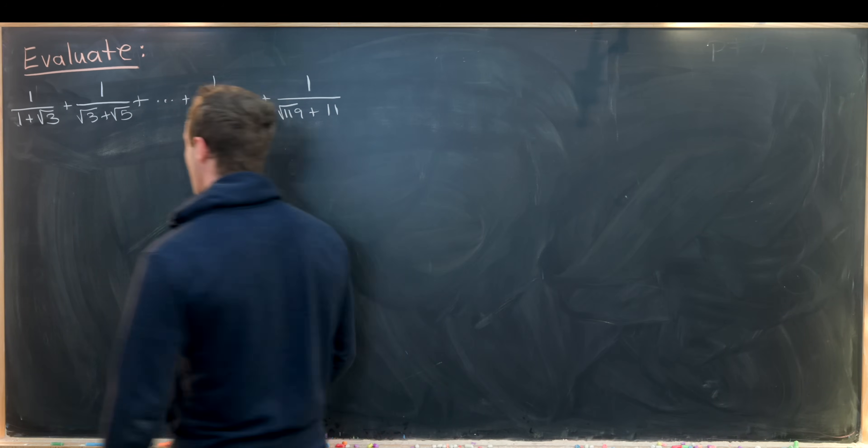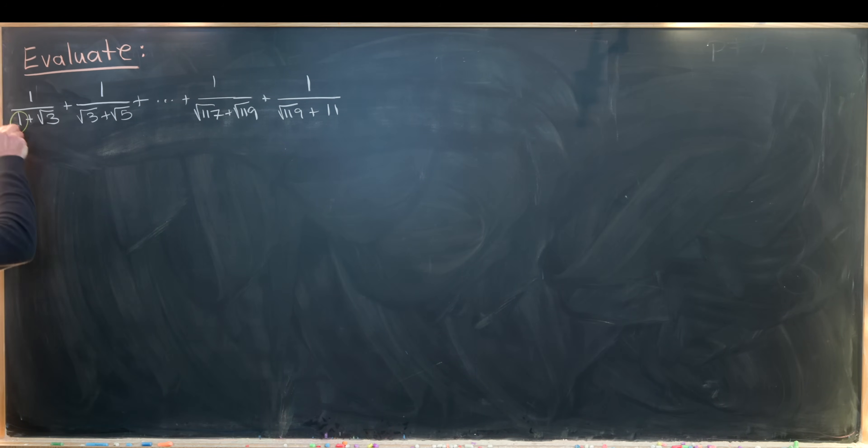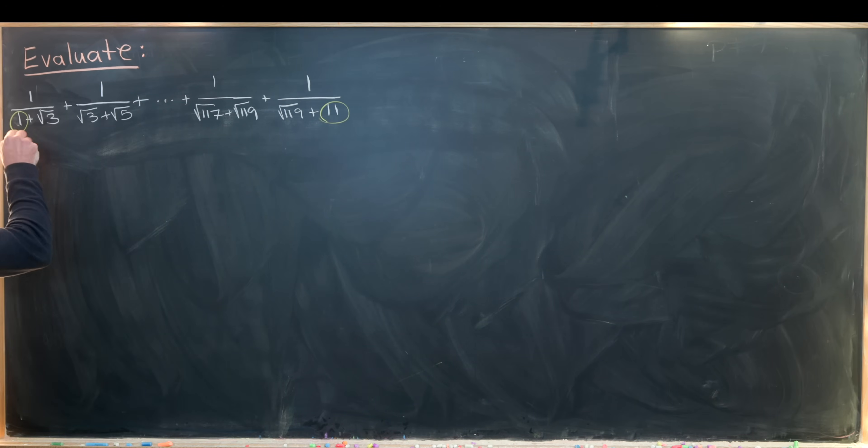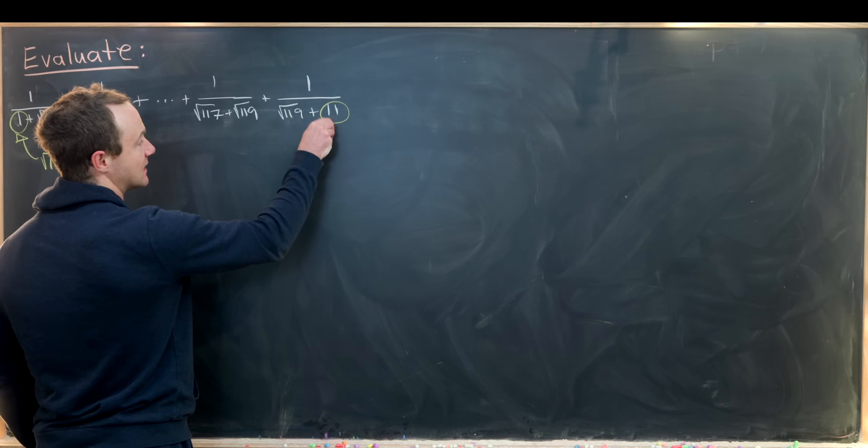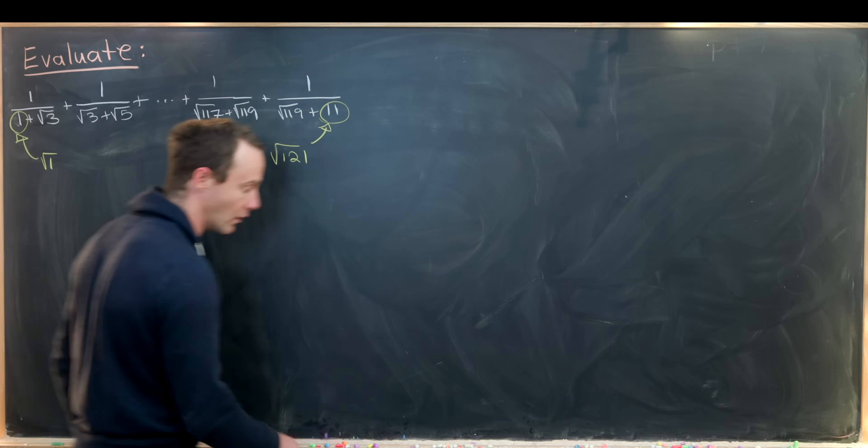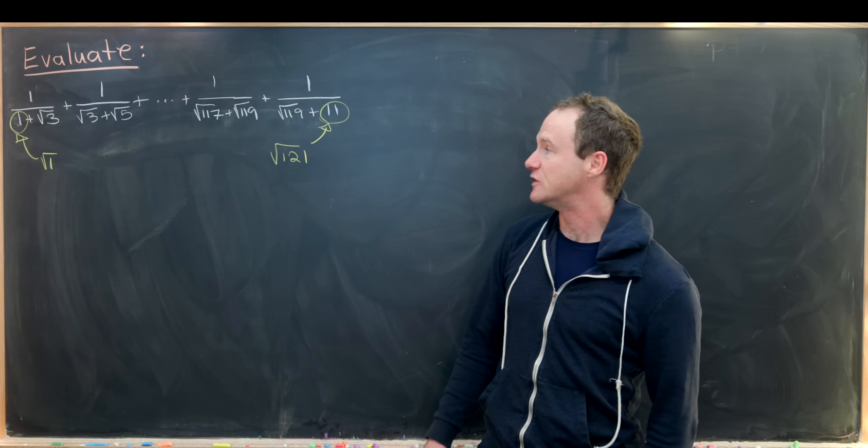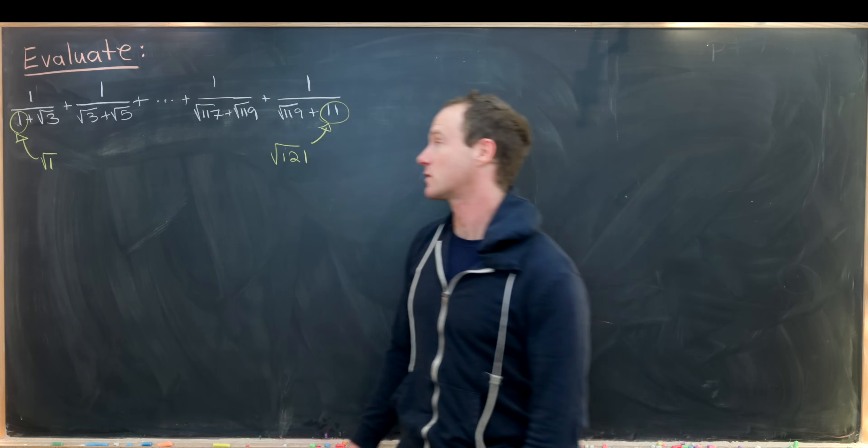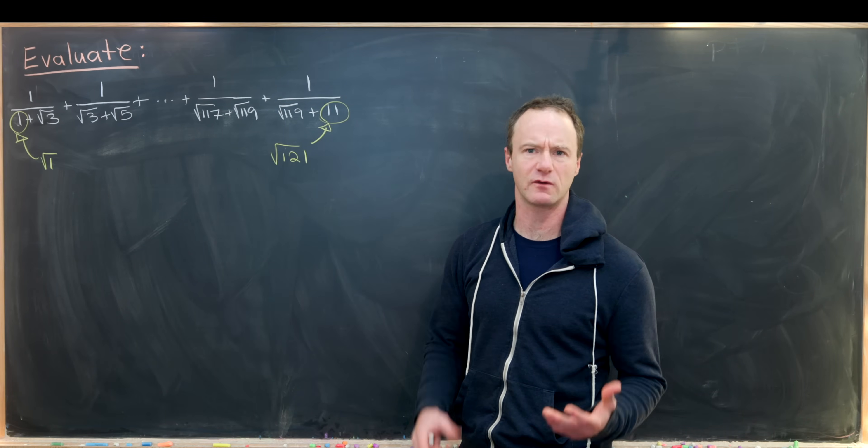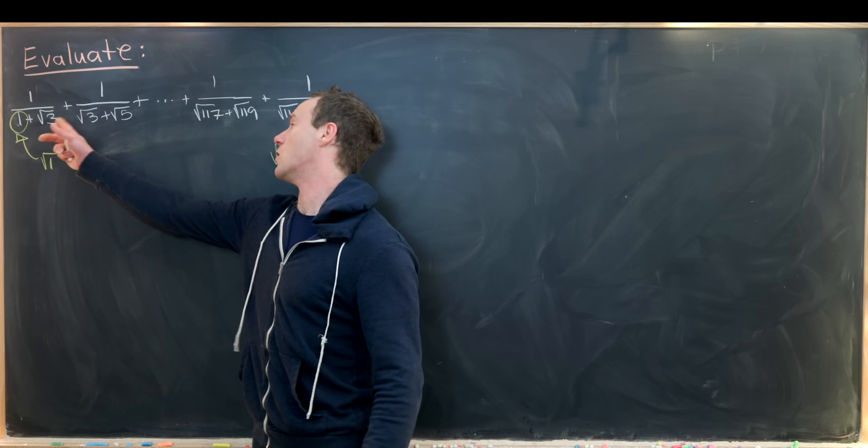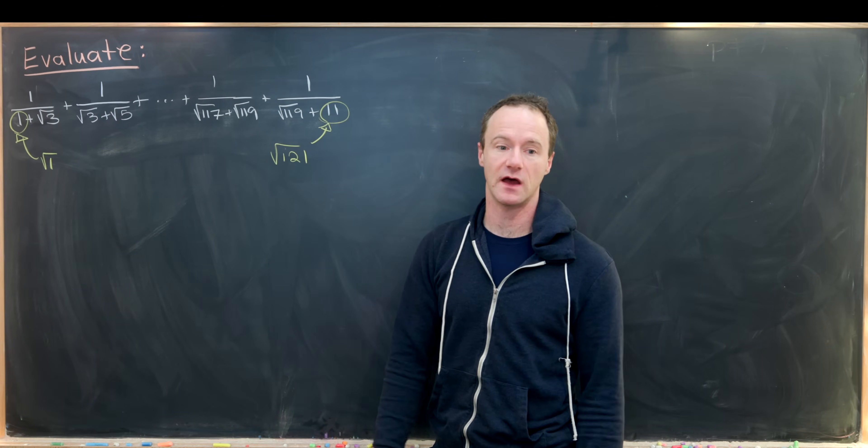Before we get started, notice that these first and last terms are not outliers. 1 equals √1 and 11 equals √121, so we follow a pattern where we're looking at the reciprocal of the sum of square roots of two consecutive odd numbers with overlap from one term to the other.